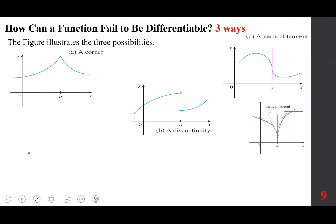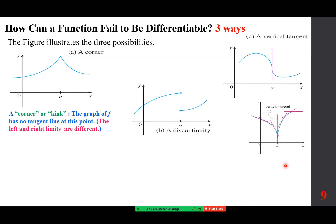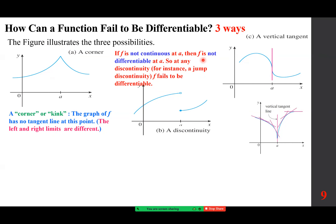A function fails to be differentiable if it has a corner, a discontinuity, or a vertical tangent line. At a corner or kink, the graph of f has no tangent line because the left and right limits are different — you can't determine which direction to draw the tangent. If f is not continuous at a, then f is not differentiable at a. At any discontinuity, such as a jump discontinuity, f fails to be differentiable.